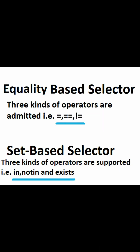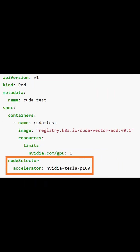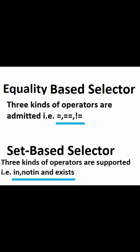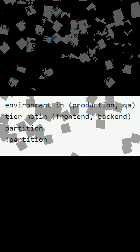The Kubernetes API currently supports two types of selectors: equality-based selectors and set-based selectors. Equality-based selectors allow filtering by key and value. Matching objects should satisfy all the specified labels. With the equality-based selector, you can use either the equal or not-equal operators.